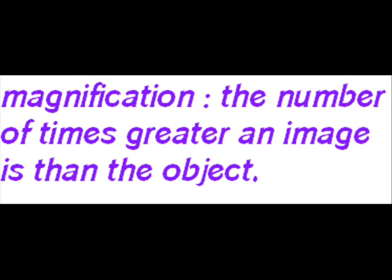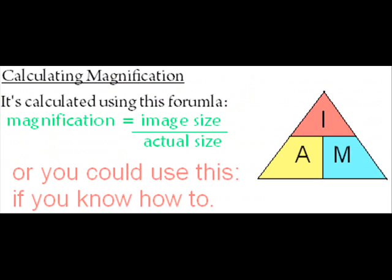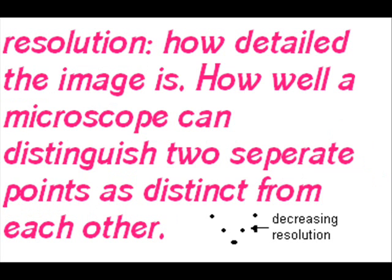Magnification is how much bigger the image is than the specimen — the sample you're looking at. It's calculated using this formula: magnification equals length of image over length of specimen. Resolution is how detailed the image is. More specifically, it's how well a microscope distinguishes between two points that are close together. If a microscope lens can't separate two objects, then increasing the magnification won't help.